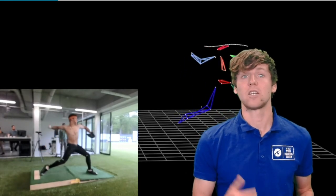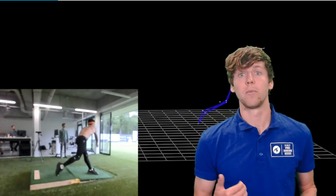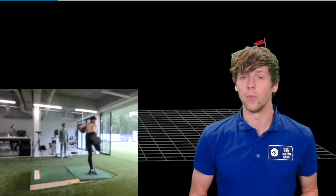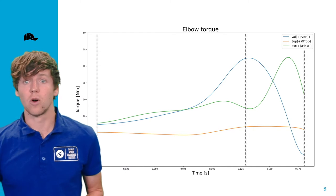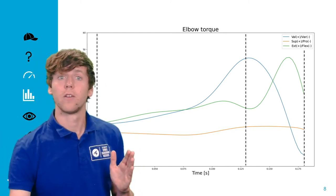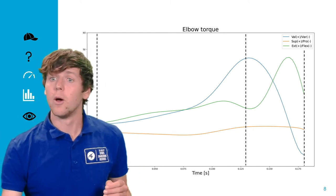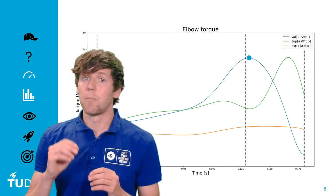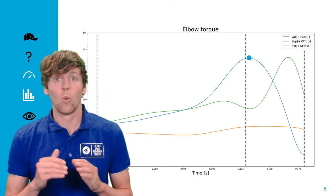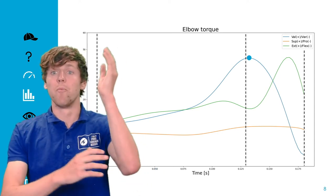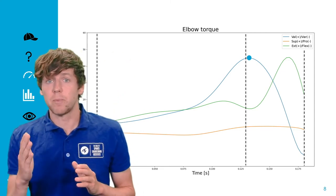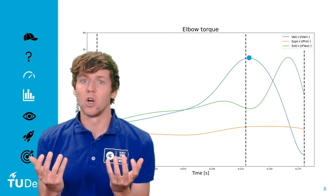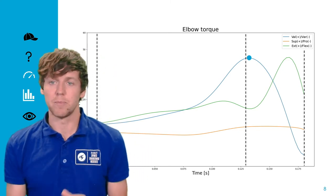We calculated the external valgus torque with a custom made inverse dynamical model. The blue line shows the external valgus torque from foot contact to ball release. The blue dot is the peak external valgus torque which occurs around the moment of maximal external rotation. We did this for each pitch of each participant and this resulted in a dataset of 270 pitches.